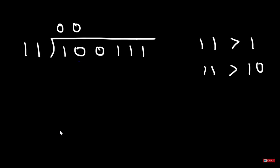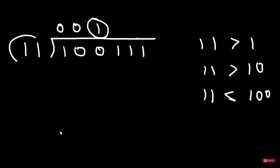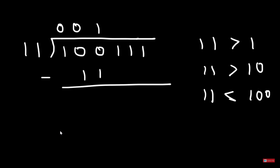Next we look at one zero zero: one one is three, one zero zero is four, so three goes into four at least once — one one goes into one zero zero one time. Multiplying one by one one gives one one, and we subtract. We can't subtract zero by one, so we borrow: the one becomes zero and the zero becomes two. We borrow again from two, making it one and the zero a two. Two minus one is one, and one minus one is zero.